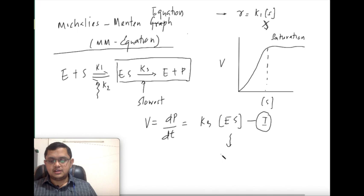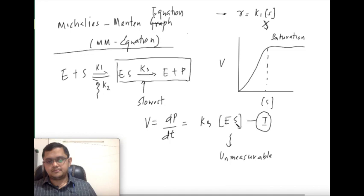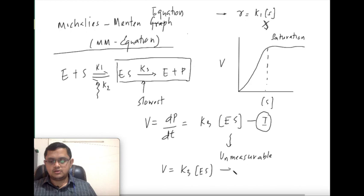But ES is generally unmeasurable during the experiment. So what should I do to make this practical? If I want to use this equation in an experiment, I should replace ES, which is unmeasurable, with measurable entities. This entire equation development is focused on that. So remember equation I: V equals k3 times [ES].